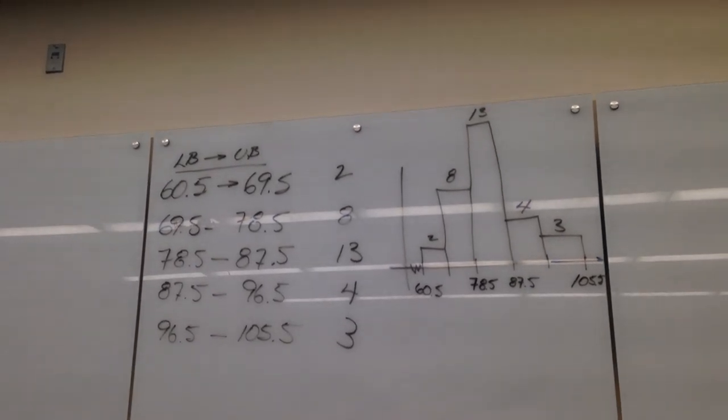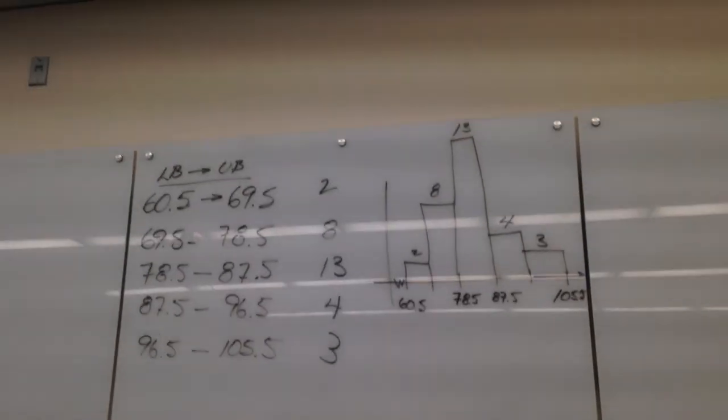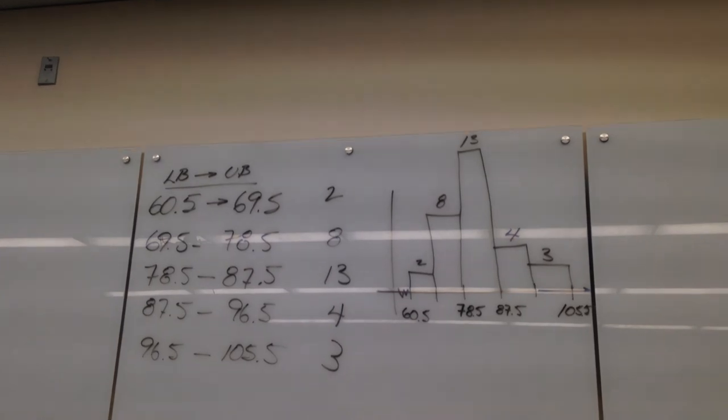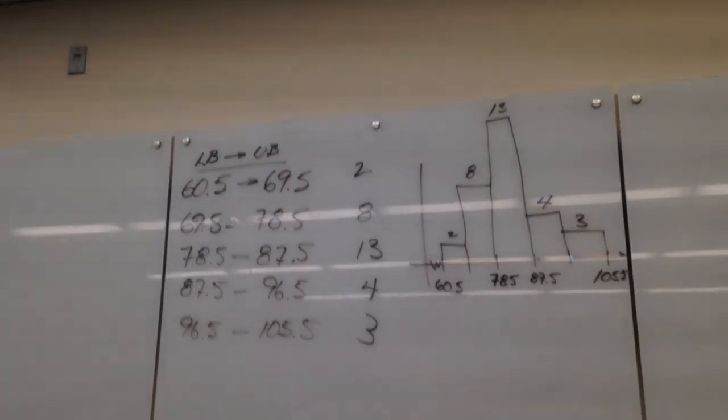Let's flip over to the front page, page 1 of the worksheet, which is talking about something called measures of central tendency.